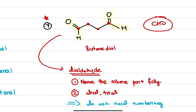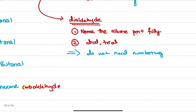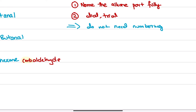To illustrate the terminal group concept: if someone tells me 'octanedial', I already know it has one, two, three, four, five, six, seven, eight carbons, and the CHO group is at each end. I don't need to be told where the aldehyde group will be because I know it always comes at the end. You can stop the video here if you like — the next part is just clarification about trials and is optional.